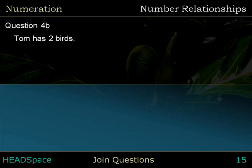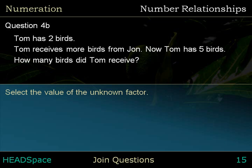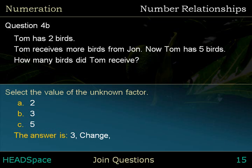Question 4b. Tom has two birds. Tom receives more birds from John. Now, Tom has five birds. How many birds did Tom receive? Select the value of the unknown factor. The answer is three. Change — Factor B is unknown.